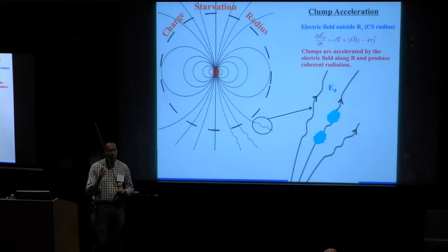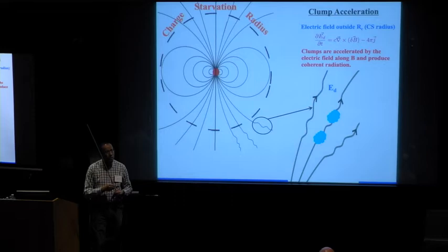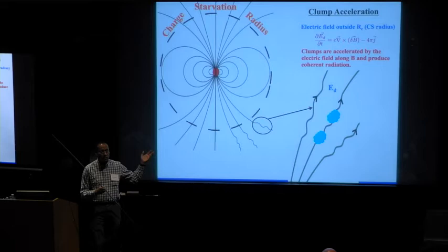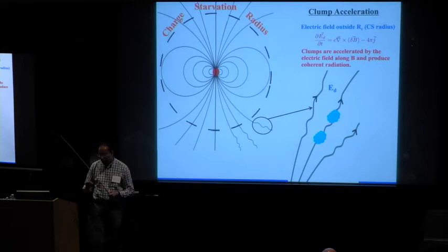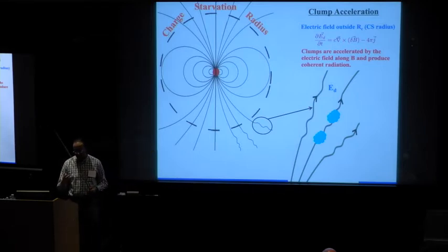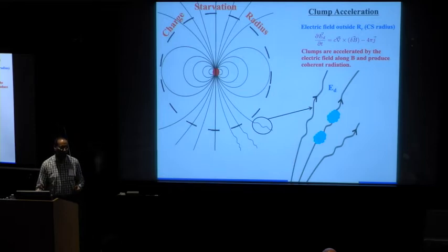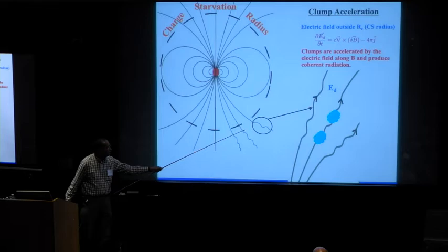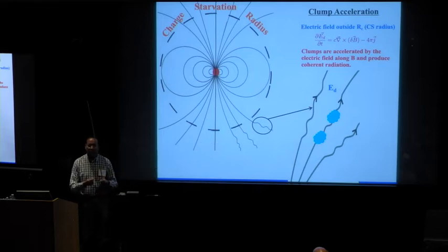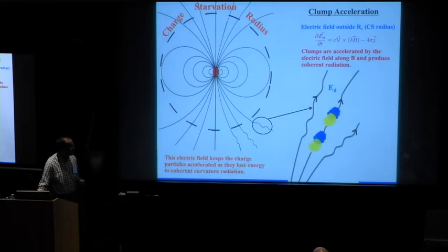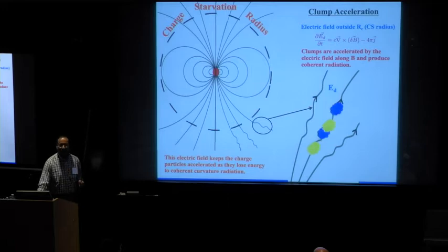This plasma clumping has been produced by the two-stream instability on a short time scale of few tens of nanoseconds. The period of the wave, or the frequency of this Alfvén wave, is tens of kilohertz. The Alfvén wave period is something on the order of tens of microseconds, whereas these things are growing on a time scale much smaller than that. And then there is an electric field along the magnetic field line.